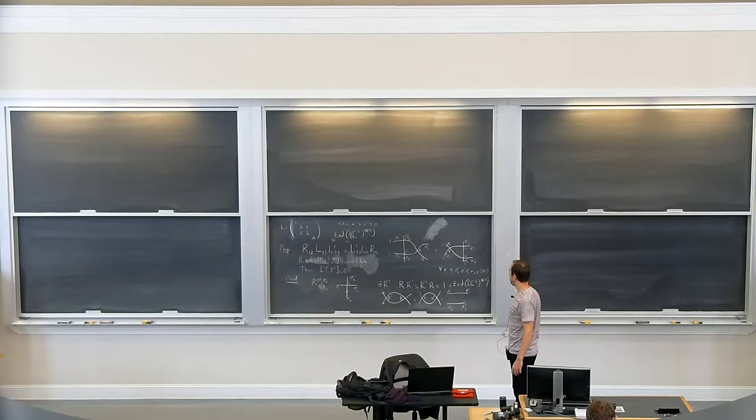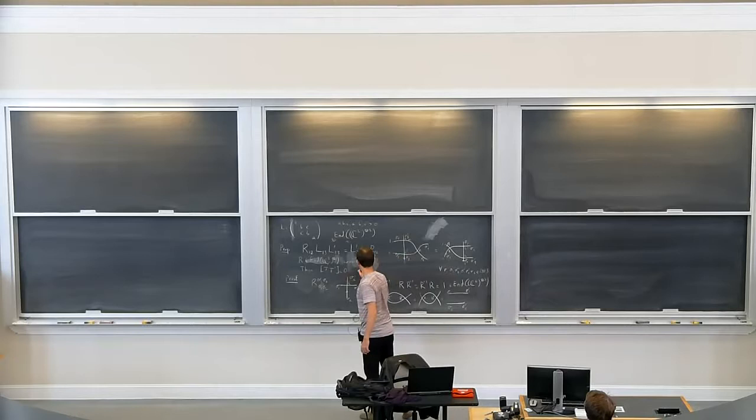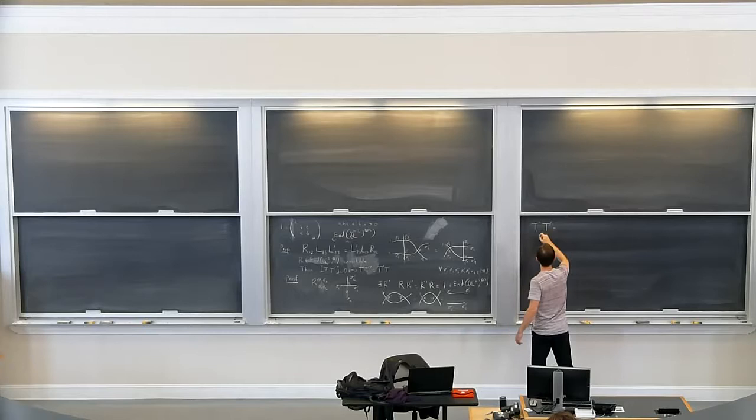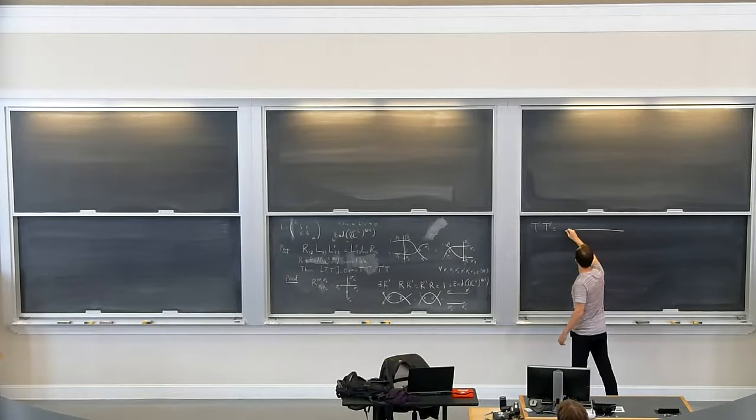The second thing we need is: what does it mean to take products of transfer matrices? This expression means explicitly TT prime equals T prime T. So what is T times T prime? We know separately what T and T prime are.